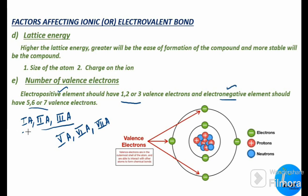Only these two types of elements — metallic/electropositive and non-metallic/electronegative — can combine together to form an ionic bond. The number of valence electrons plays a vital role in forming the ionic or electrovalent bond.